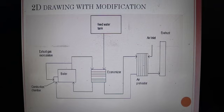Here the economizer is used for heating of water, that is to heat the feed water in the boiler. And the air preheater is used for heating of air that is fed in the combustion chamber.